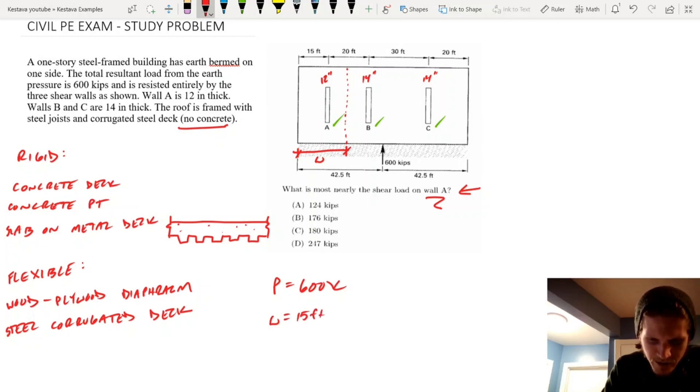That all gets distributed to shear wall A, and then it's one-half the distance between A and B, which is 20 feet. So, it's one-half of 20 feet, and it's the full 15 feet. So, 15 feet plus 20 feet over 2, that gets you 25 feet of tributary width.